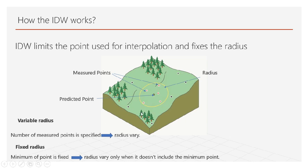But for example, if we specify six points, the radius will vary until it contains and includes those six points. The second option is fixed radius, where the minimum number of points has to be fixed, and the radius varies only when it doesn't include the minimum number of points. For example, if we specify only two points, the radius will just contain those two points.